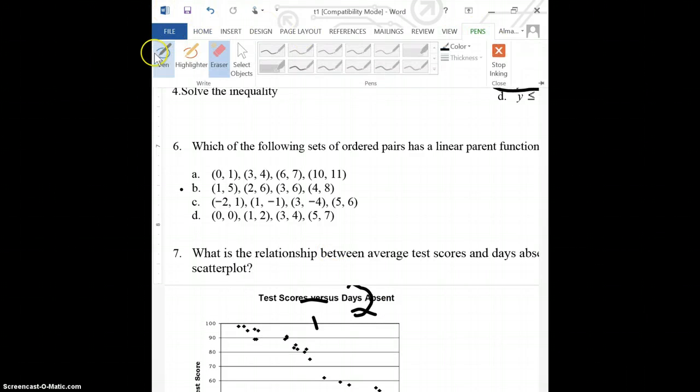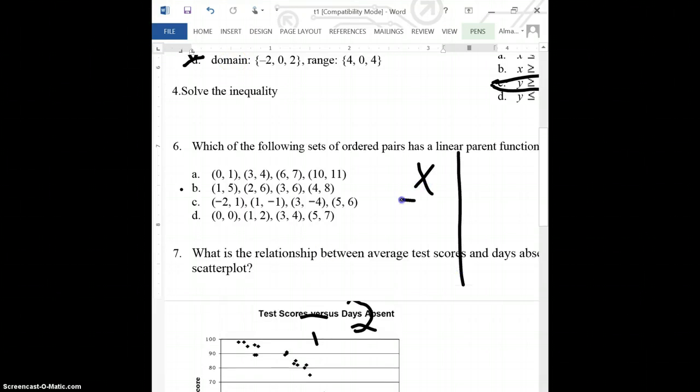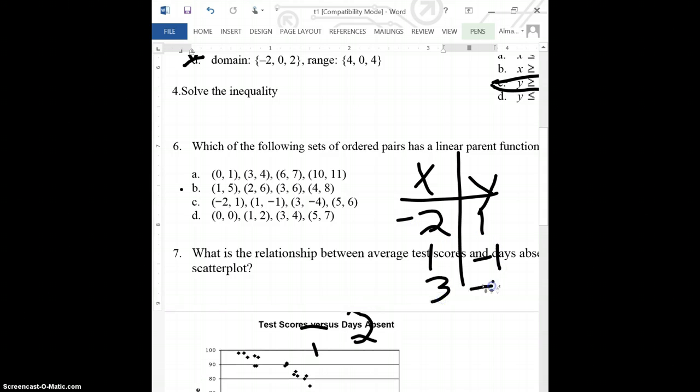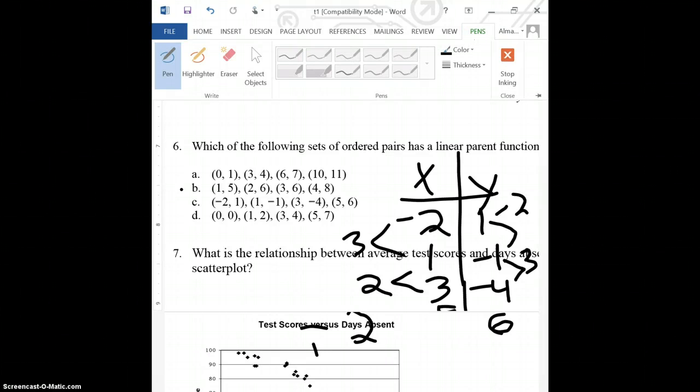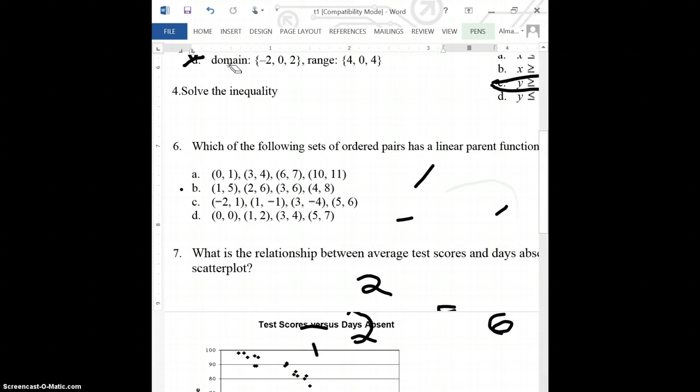So, I'm just going to go ahead and try c. As I'm writing my table, I'm looking at (-2, 1), (1, -1), (3, -4), (5, 6). To go from negative 2 to 1, I add 3. To go from 1 to 3, I add 2. To go from 1 to negative 1, I have to subtract 2. To go from negative 1 to negative 4, I have to subtract 3. And right away, I can already see that that is not going to be linear, because negative 2 divided by 3 is negative 2 over 3. And negative 3 over 2 is negative 3 over 2. They're different numbers. So, that's not my answer either. So, maybe I should have tried a. Maybe a is my answer after all.